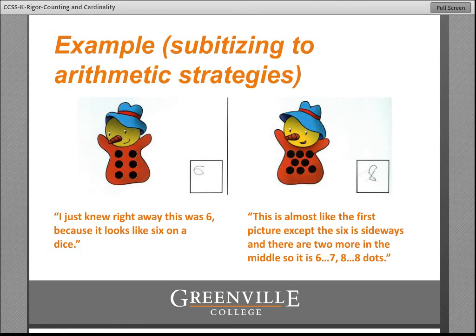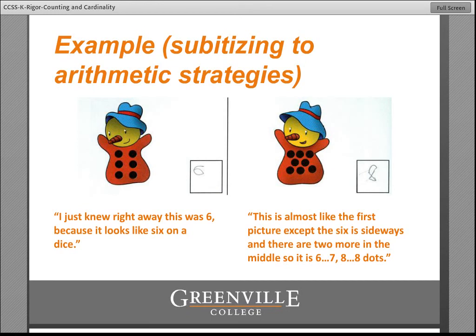Here's an example from a text where the first image is a familiar pattern — they can subitize six. The second one isn't exact, but if they just saw six, they might see the six here too: the six is sideways and there are two dots in the middle, so they might say, 'That's six, plus two more — so seven, eight.' That's an example of how in a kindergarten curriculum you can do a subitizing-to-arithmetic strategy progression. Note that one example alone does not address the progression — students need enough experience with this that it becomes part of the way they think.